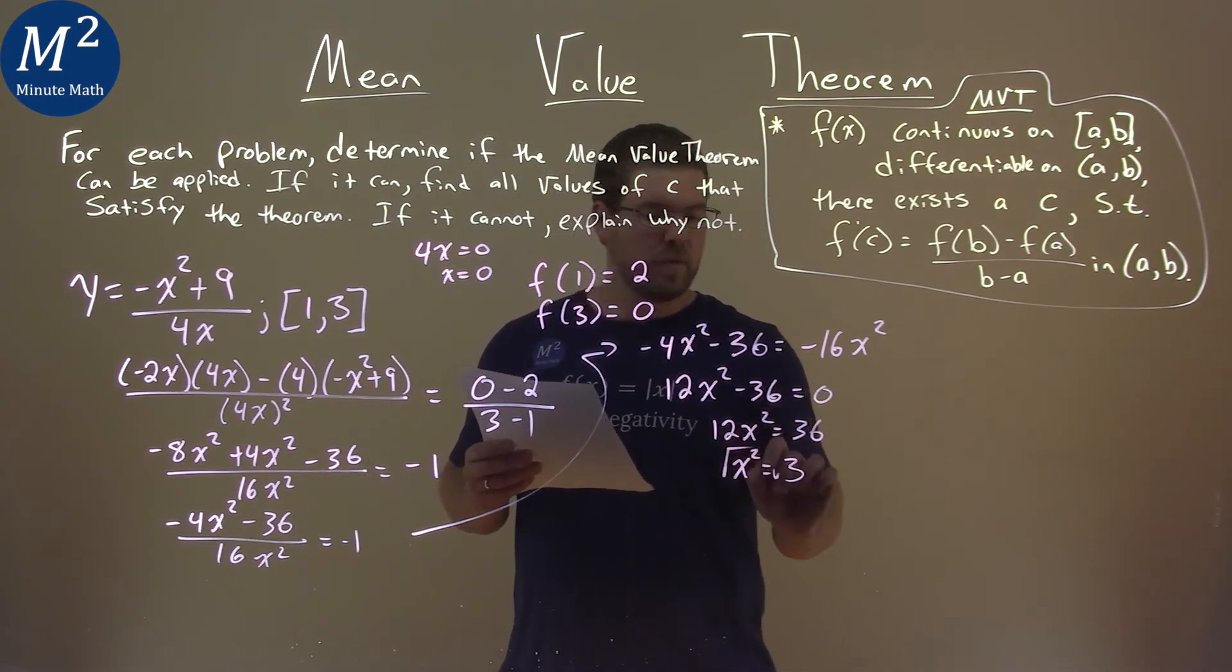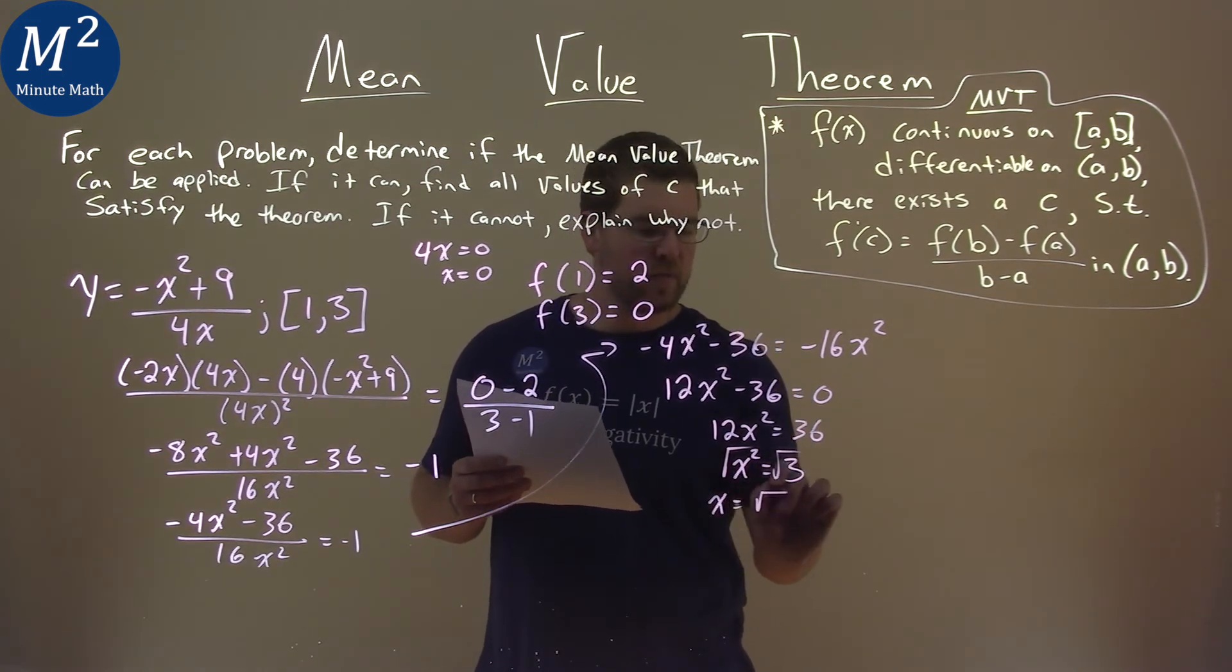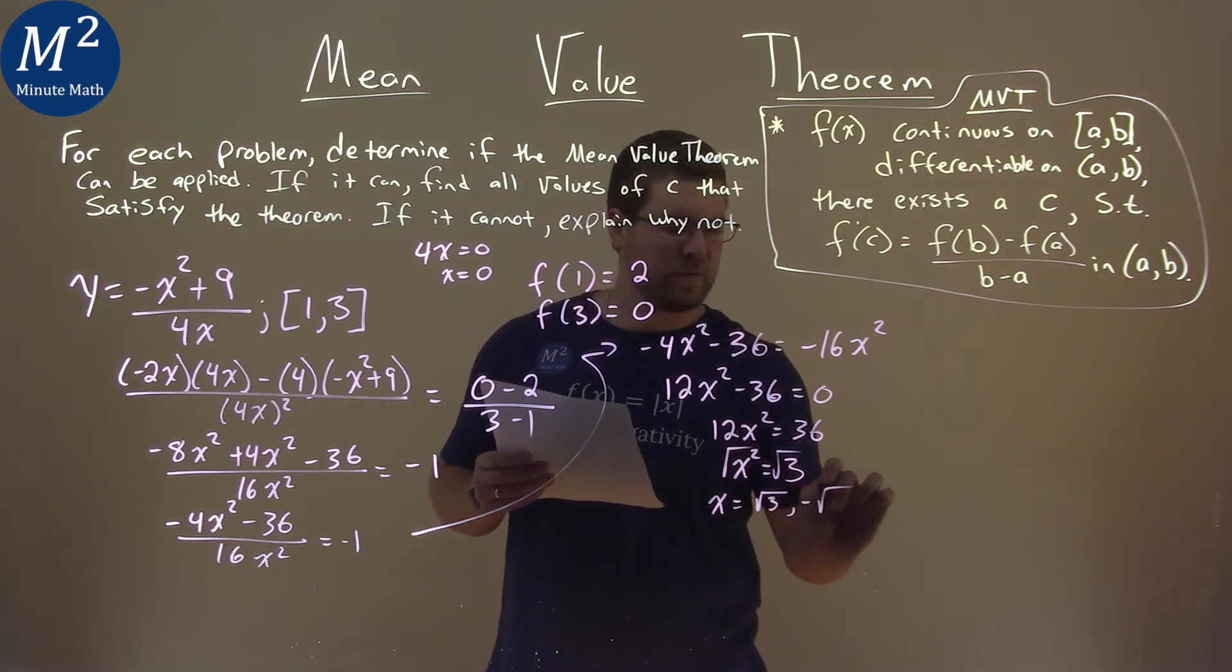We then take the square root of both sides, and we have x equals positive square root of 3 and negative square root of 3.